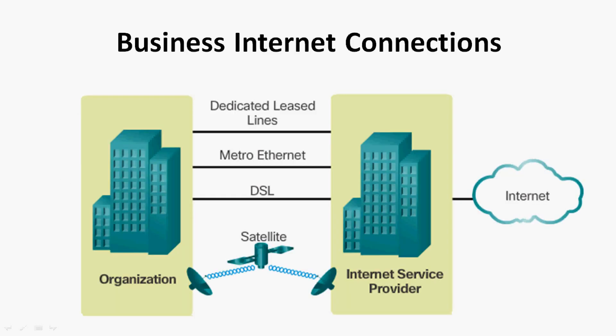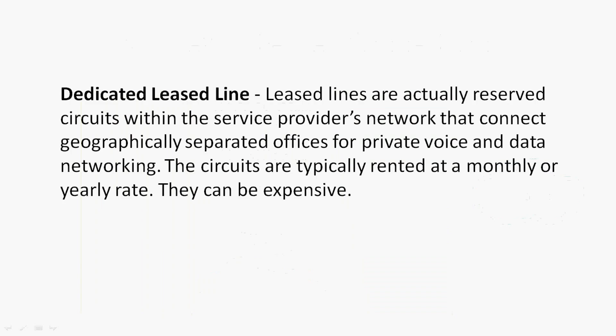Now we will see different internet connections used in business. Usually they use dedicated Leased Lines, Metro Ethernet, DSL, or Satellite. Coming to the first one, that is dedicated Leased Lines. Leased lines are reserved circuits within the service provider's network that connect geographically separated offices for private voice and data networking. The circuits are typically rented at a monthly or yearly rate and can be expensive.